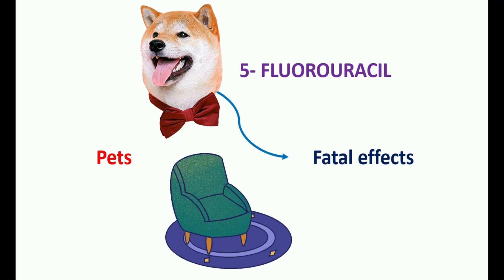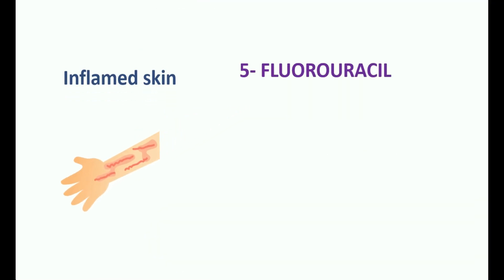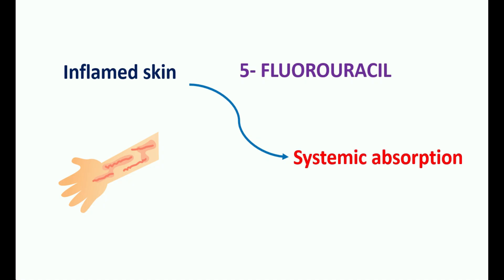When applying 5-fluorouracil to inflamed skin, it increases the risk of systemic absorption, which may lead to systemic toxicity. Since many anti-cancer agents are toxic in nature, 5-fluorouracil can also produce systemic toxicity leading to a number of systemic side effects. This medication should be applied such that there is minimal systemic absorption. The same risk applies when applying to ulcerated skin, where the chance of absorption into the body increases.